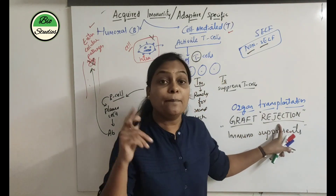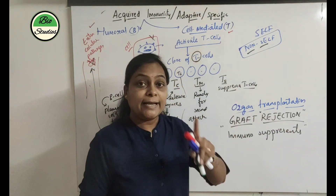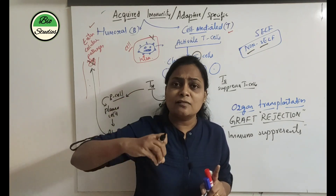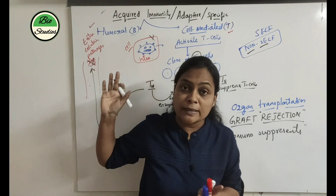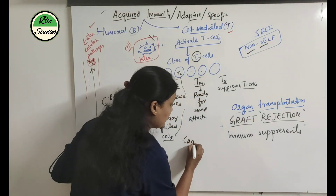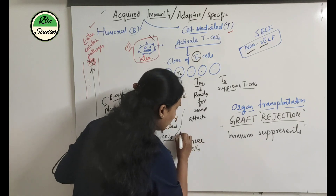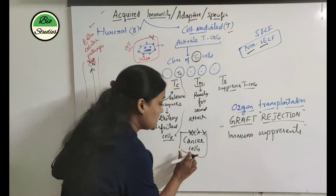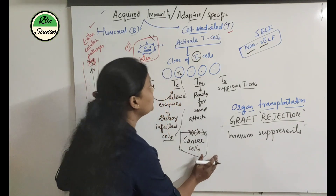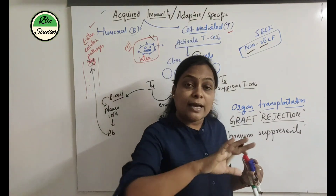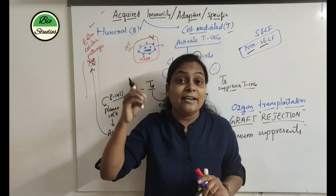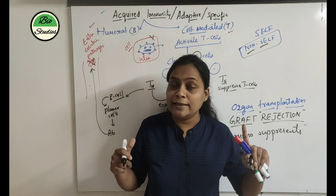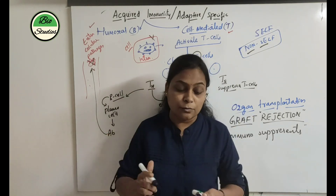Graft rejection is mainly due to cell-mediated immunity. Cancerous cells are also destroyed with the help of T-cells through cell-mediated immunity. So for cell-mediated immunity, you have to remember T-cells and their different types.